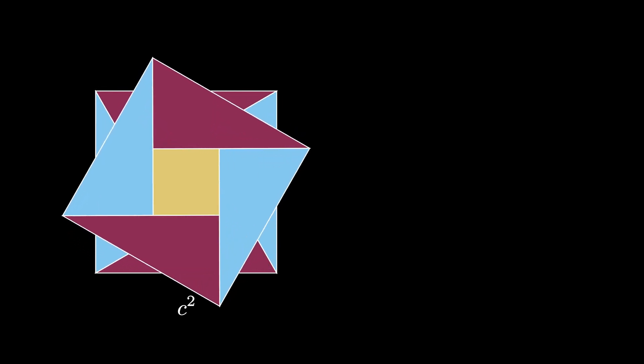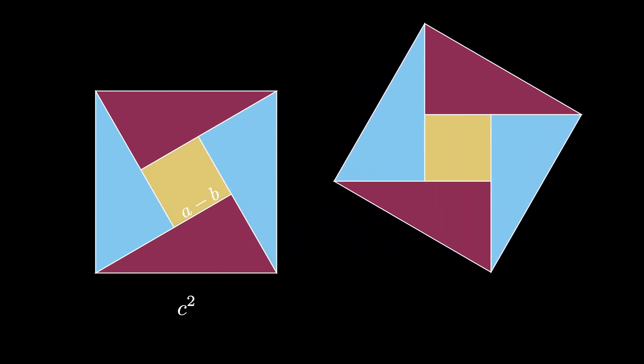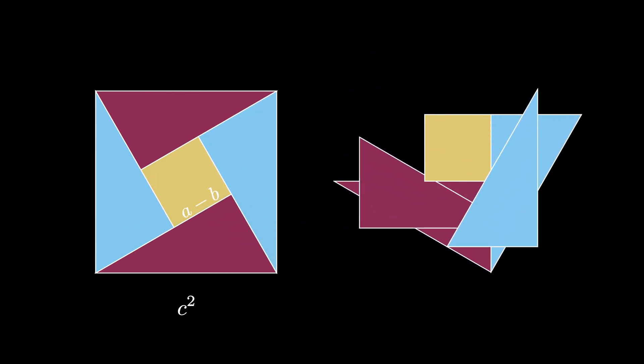The area contained in this diagram is C squared, but now we can take a second copy of this diagram, rotate it and shift it, and then shift two of the triangles strategically like this.